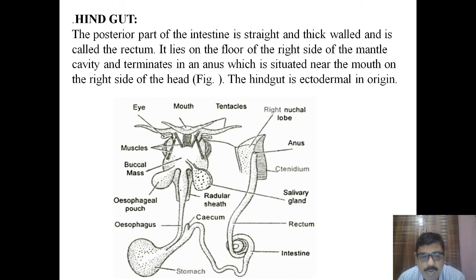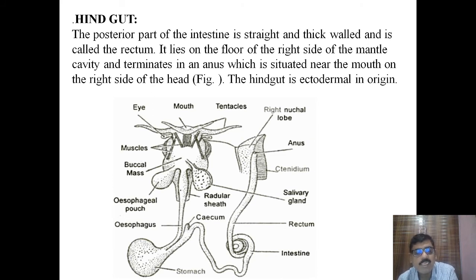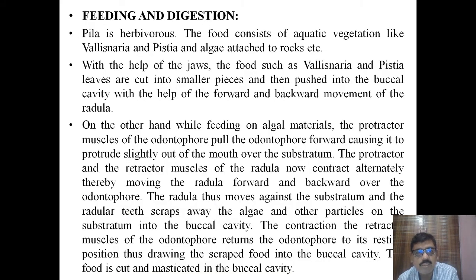The entire digestive system comprises foregut, midgut, and hindgut. The foregut comprises the mouth, buccal cavity, esophageal pouches, and esophagus. The midgut comprises the cardiac stomach and the pyloric stomach. At the junction of the intestine and stomach there is a blind outgrowth called the caecum. The hindgut comprises the rectum and is ectodermal in origin.